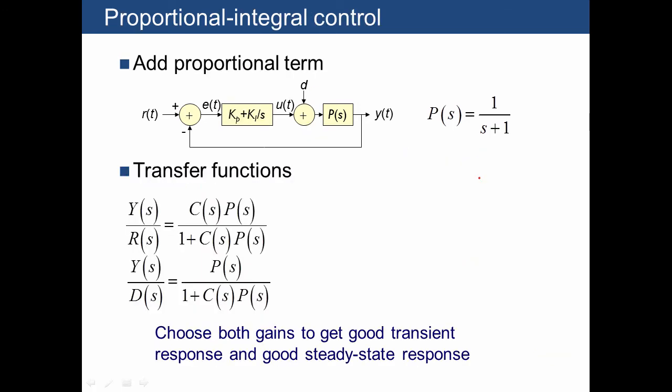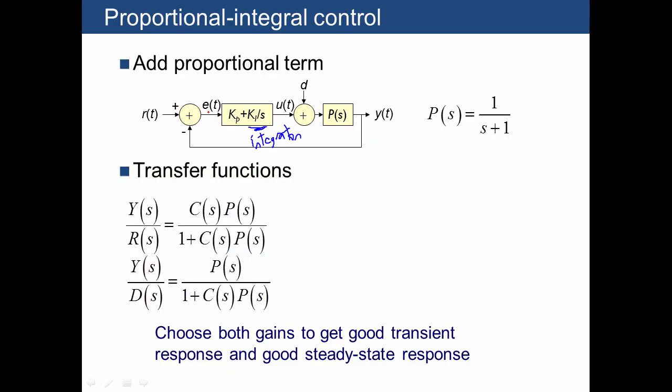The solution is to add what we call integral control. That's this term here, where we have a constant Ki, and 1 over S acts like an integrator. And what it does is, if you have a steady error, the integrator is going to build up and produce a larger and larger signal, which is a command that's going to act on our system to resist the effect of that disturbance.